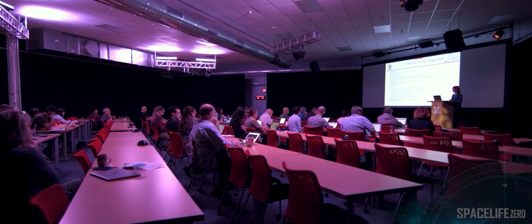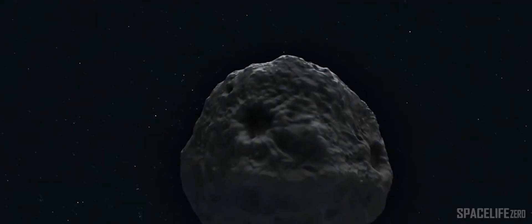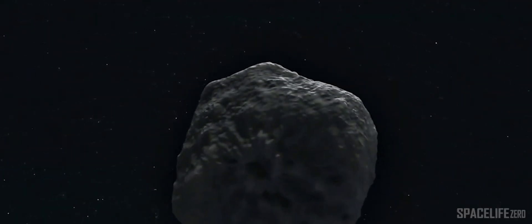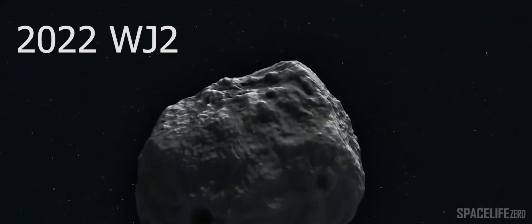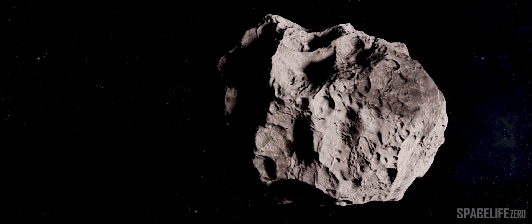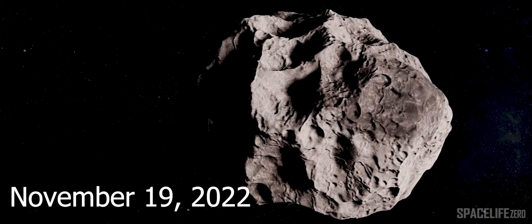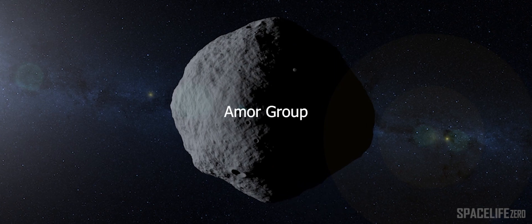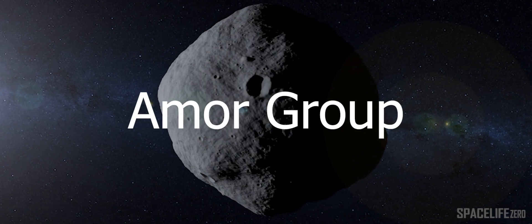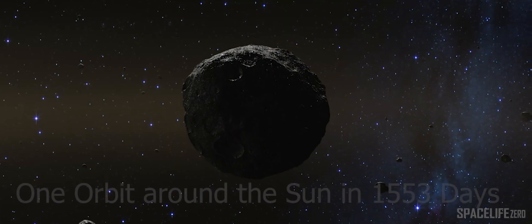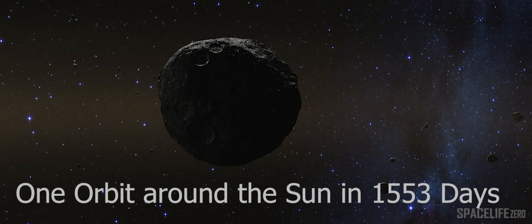According to the Center for Near-Earth Object Studies at NASA's Jet Propulsion Laboratory, the asteroid has been designated Asteroid 2022 WJ2. The asteroid was detected on November 19, 2022, and it belongs to the Amor Group. It makes one orbit around the Sun in 1,553 days.